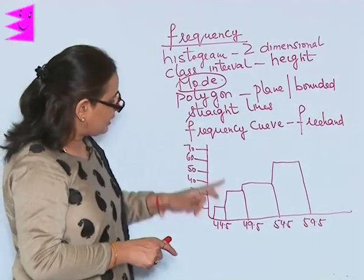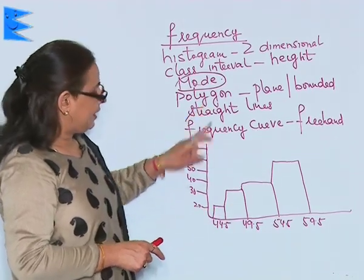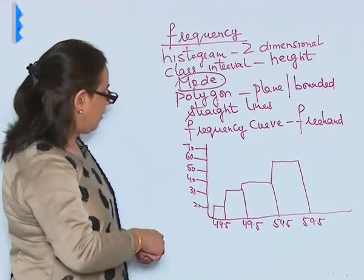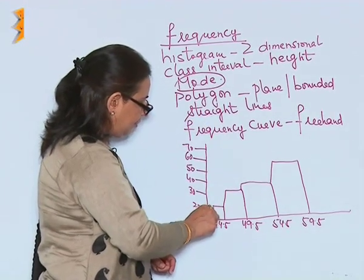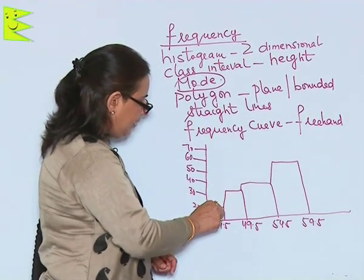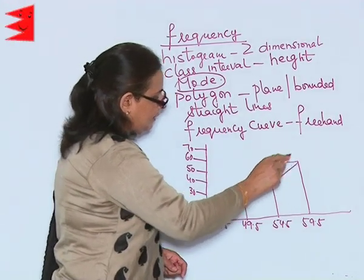Now, as I said, this can be changed into a polygon. It can be drawn without the histogram also. But for a simple polygon, I draw from here and pick up like this.